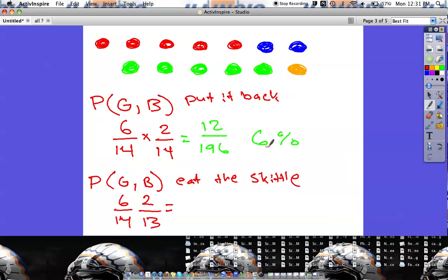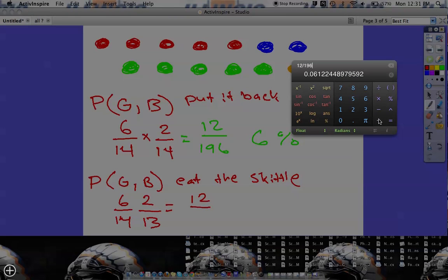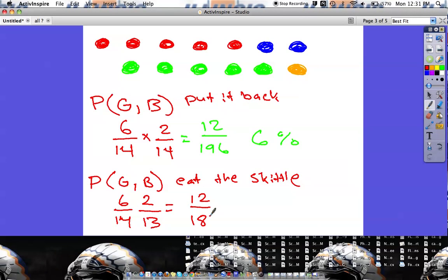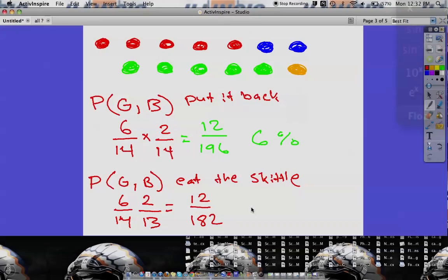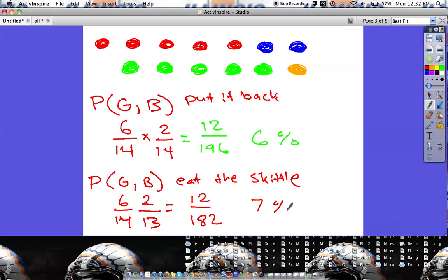So now when I come down to the blue, my chances for the blue will be two out of, but there's not fourteen Skittles anymore because I ate that other Skittle. So there's actually only thirteen Skittles. So now if I do this, it's going to be pretty close to what we had before, but not quite the same. The top number is still going to be twelve, but the bottom number is going to be fourteen times thirteen, which should be one eighty two. If we find the percentage for that, we come up with still six percent, but it's a little bit higher. It's almost seven percent. So I'm going to go ahead and round that up to actually seven percent.